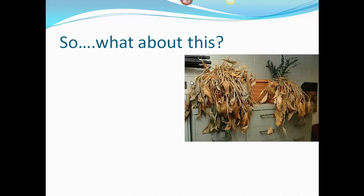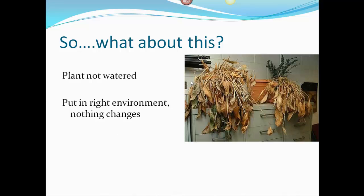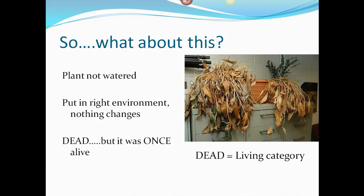I'm not a person with a green thumb — a lot of my plants end up dying and looking like this. The difference is if you don't water a plant over an extended period of time, way past the point where watering it does nothing, you know the item is dead. But the thing is, it was once living. It had all eight characteristics of life, and even though it's dead, it was once a living thing — and that means it fits in the living category. Anything that had all eight characteristics at one point in time is considered a living thing.